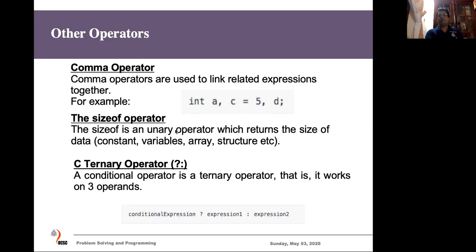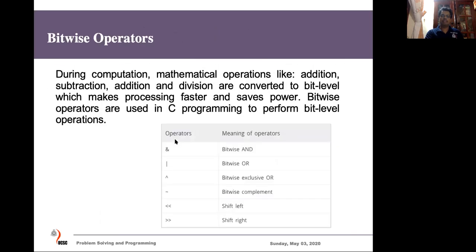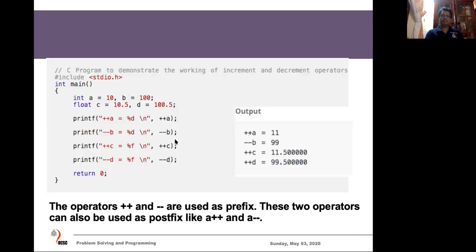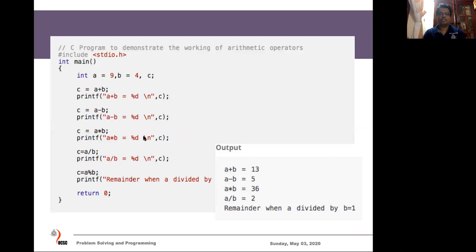The sizeof operator in C returns the size of a variable in memory — for example, an integer is usually four bytes and a character is one byte. C also has a ternary operator represented by a question mark and colon (?:), which is equivalent to an if-else condition. Since we haven't covered conditionals yet, I won't go into detail. Those operators you may automatically learn as you move on. That's all about this session, but let me show you some programs to demonstrate how some of these operators work.